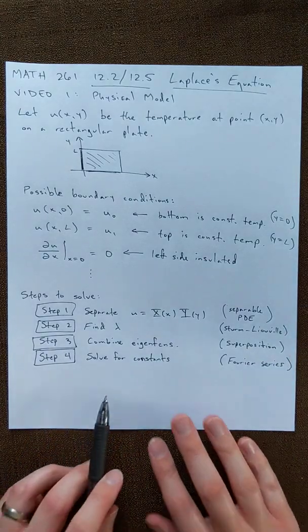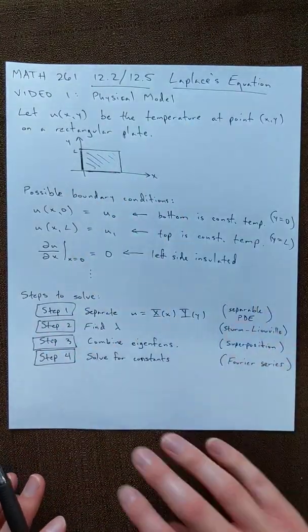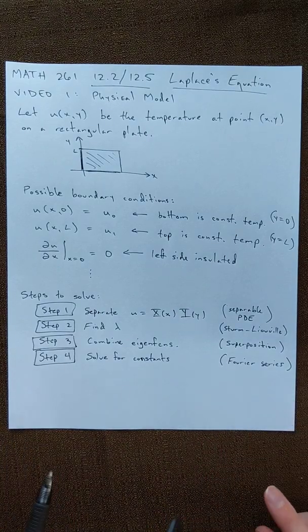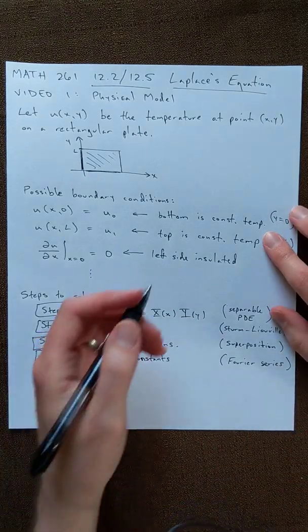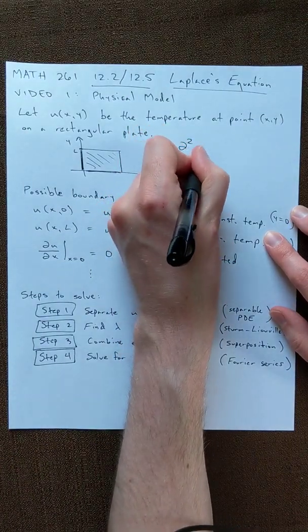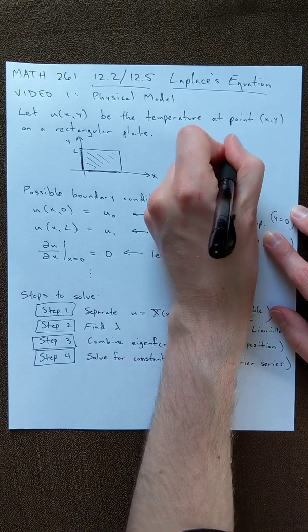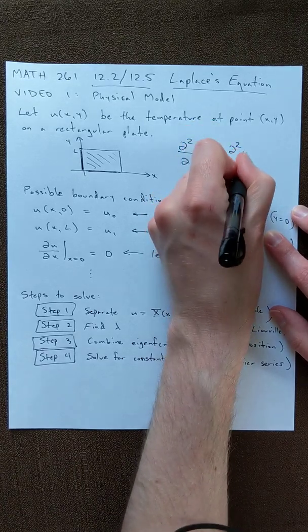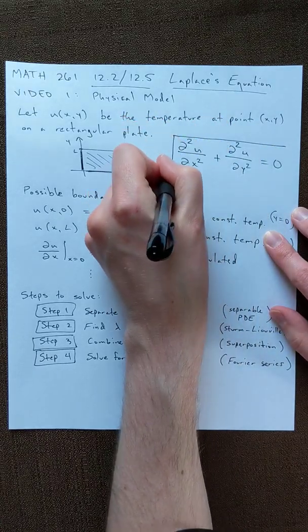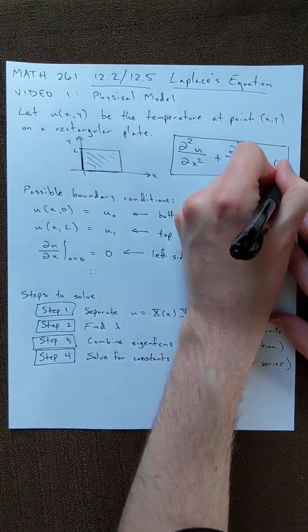It seems like maybe it would be helpful if somewhere on this piece of paper I actually had a differential equation written down. Maybe let's do that. So our differential equation is second derivative of u with respect to x plus second derivative of u with respect to y is equal to zero. That's really important. Otherwise, how the heck are we supposed to get started?